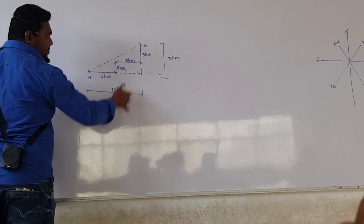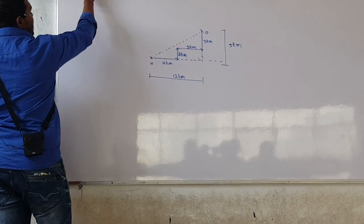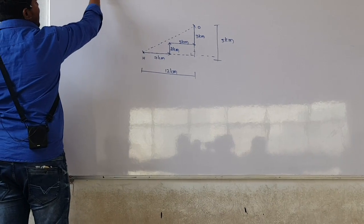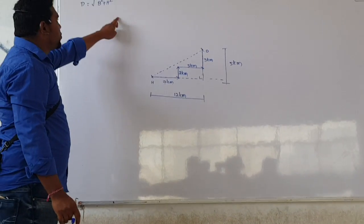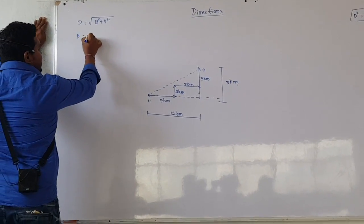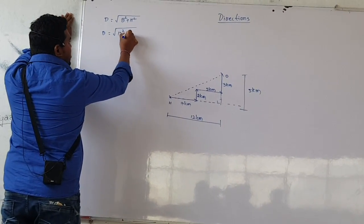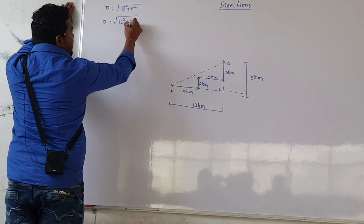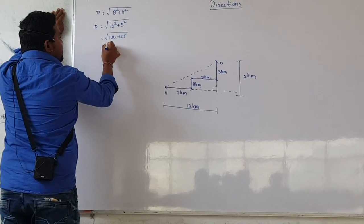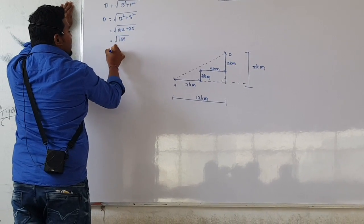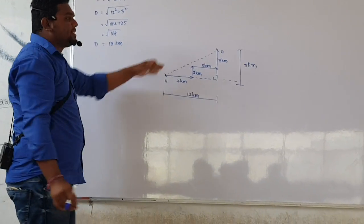The horizontal distance is 12 km and the vertical distance is 5 km. The formula is D equals root of base squared plus height squared. Base is 12 km, so 12 squared is 144. Height is 5 km, so 5 squared is 25.